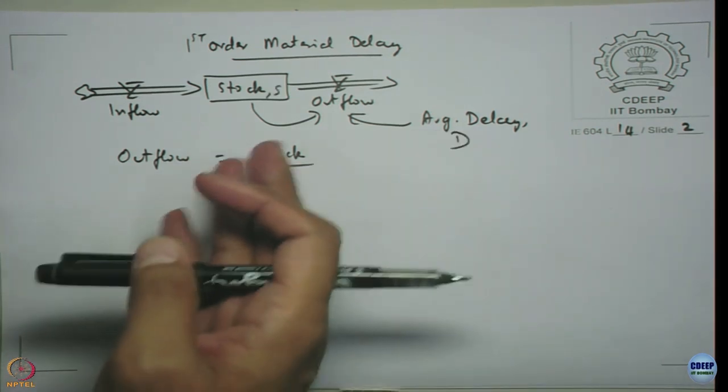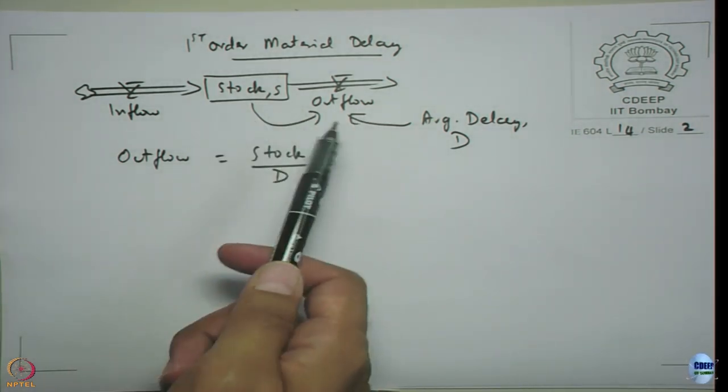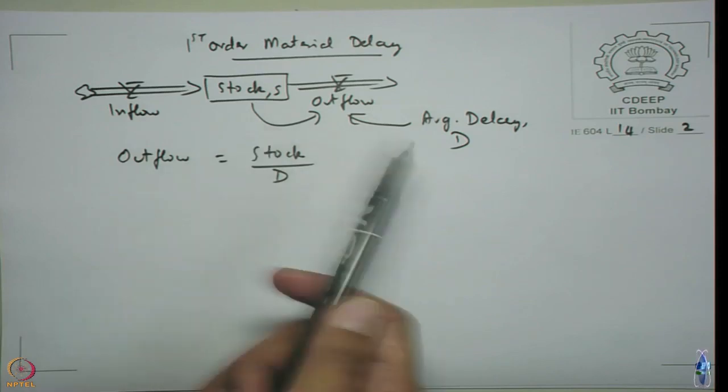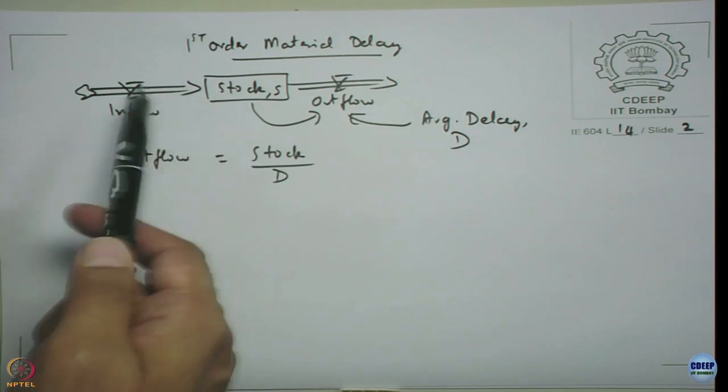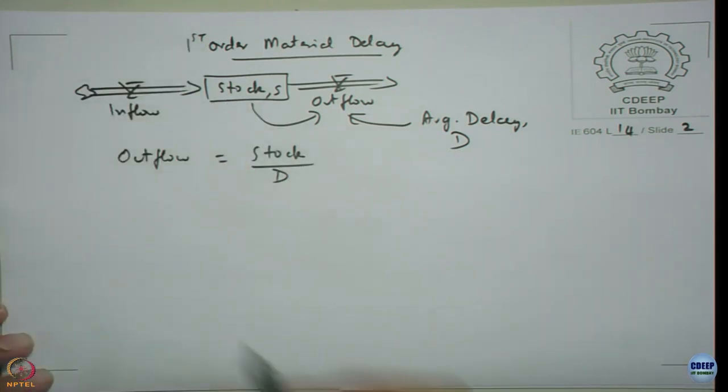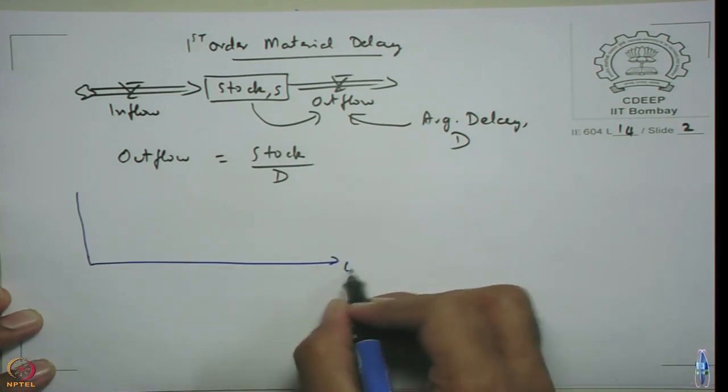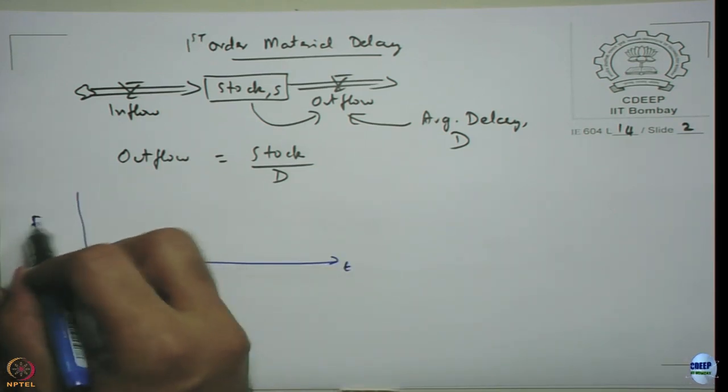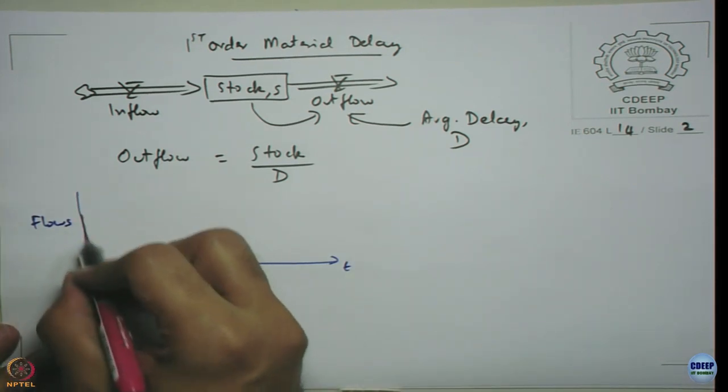You already know this is like a first order negative feedback system or a zero value goal. If you assume the initial at time zero there is some initial quantity after there is nothing happening, it will constantly drain. The outflow that you will get will be something like, suppose this is your time and these are your flows assuming a pulse input at time zero.